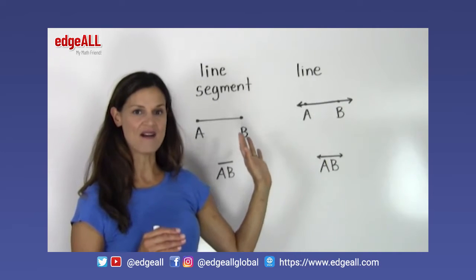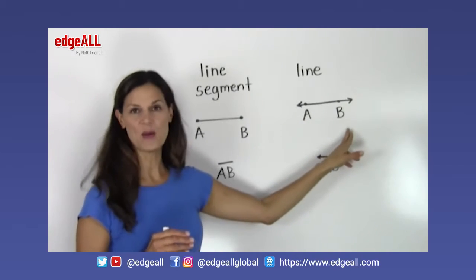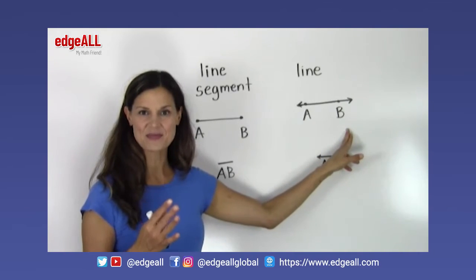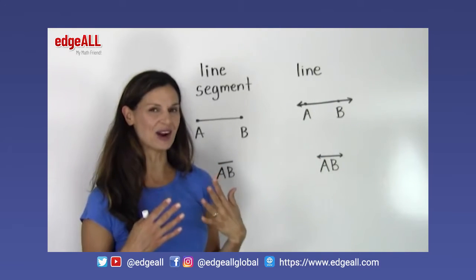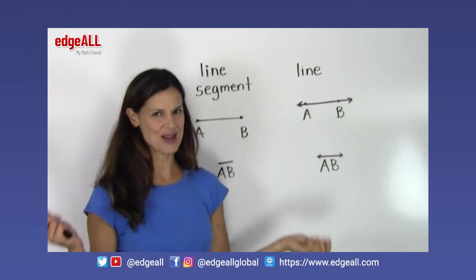we also have points A and B, but the line is infinite. It extends in both directions forever, and we can't measure it with the measuring tape.